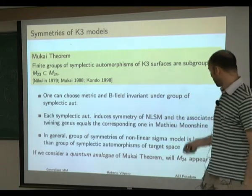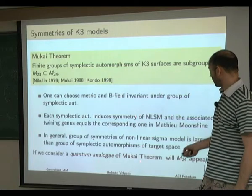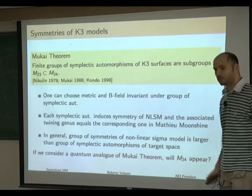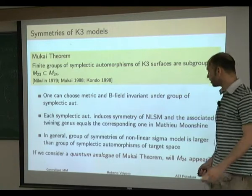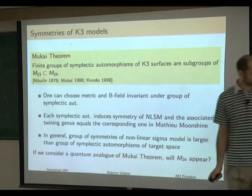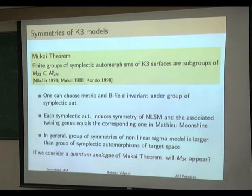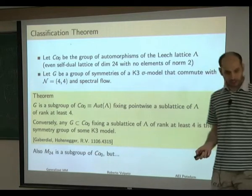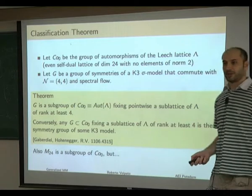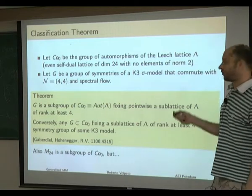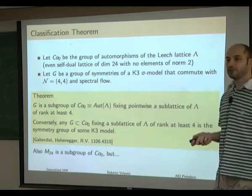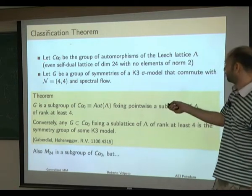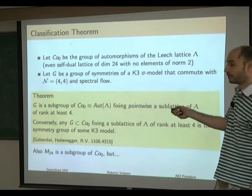At the time, we started to study this classification problem together with Stefan and Matthias Gaberdiel, and the result was quite surprising: instead of the Mathieu group M24, we found a different finite group — the Conway group Co0.